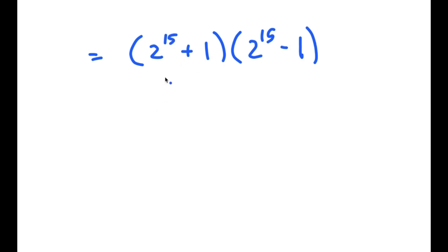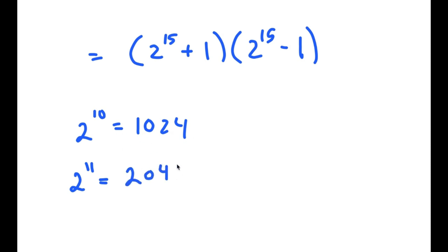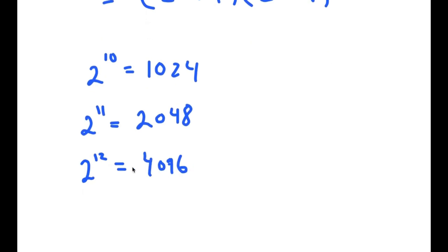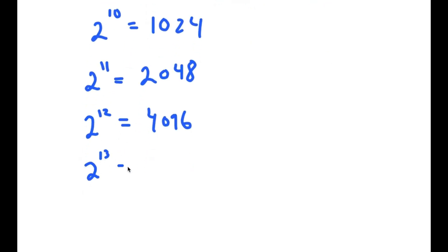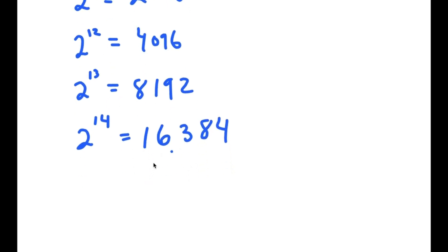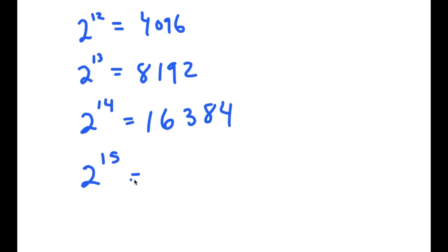Now, 2 to the power of 15 — what's the value of that? Well, 2 to the power of 10 is 1024. So 2 to the power of 11 is double of 1024, which is 2048. 2 to the power of 12 is double of 2048, which is 4096. 2 to the power of 13 is double of 4096, which is 8192. 2 to the power of 14 is double of that, which is 16,384. And finally, 2 to the power of 15 is double of this, which is 32,768.